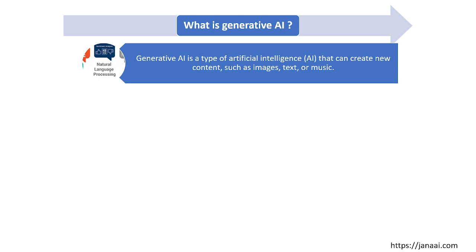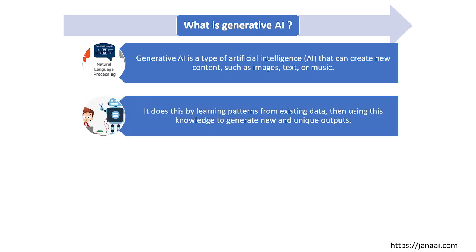Generative AI is a type of artificial intelligence that can create new content such as images, text, music, audio, and video. It does this by learning patterns from existing data and then using this knowledge to generate new and unique data.